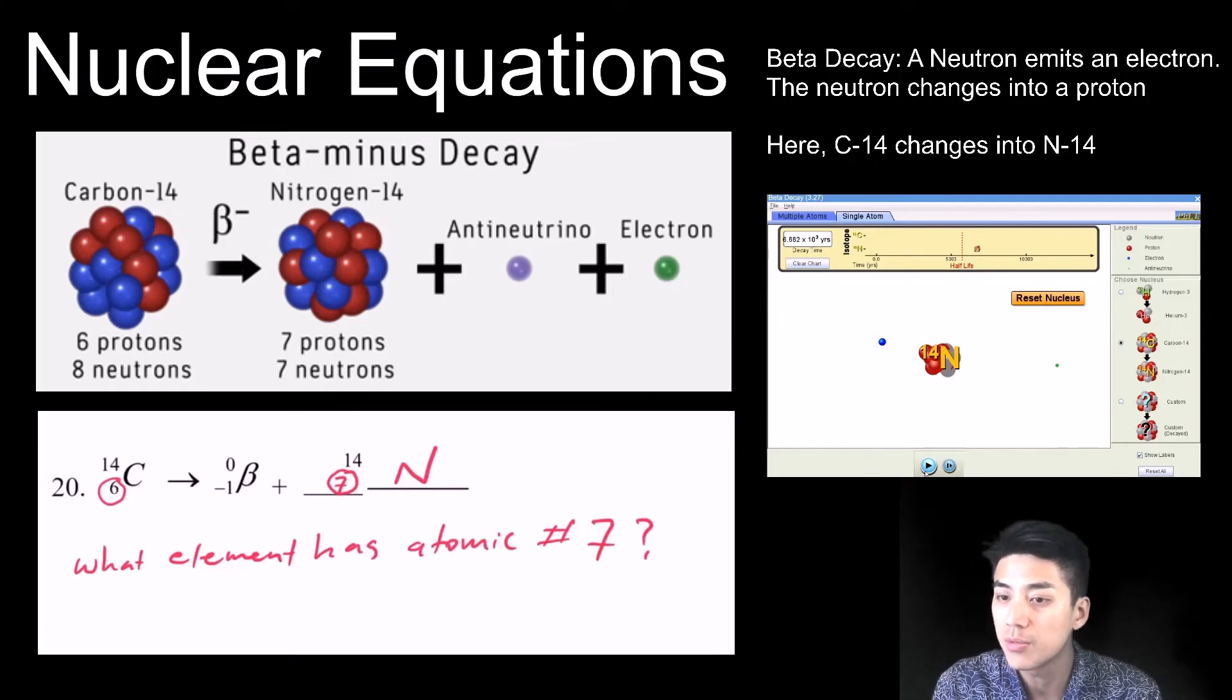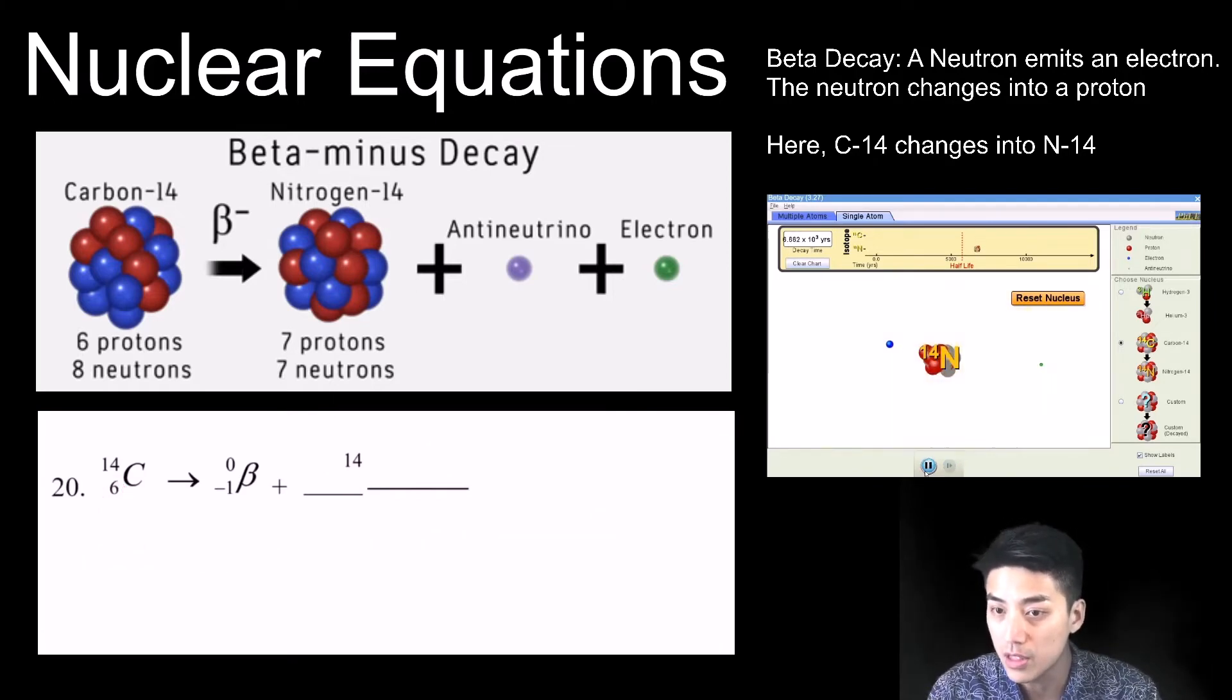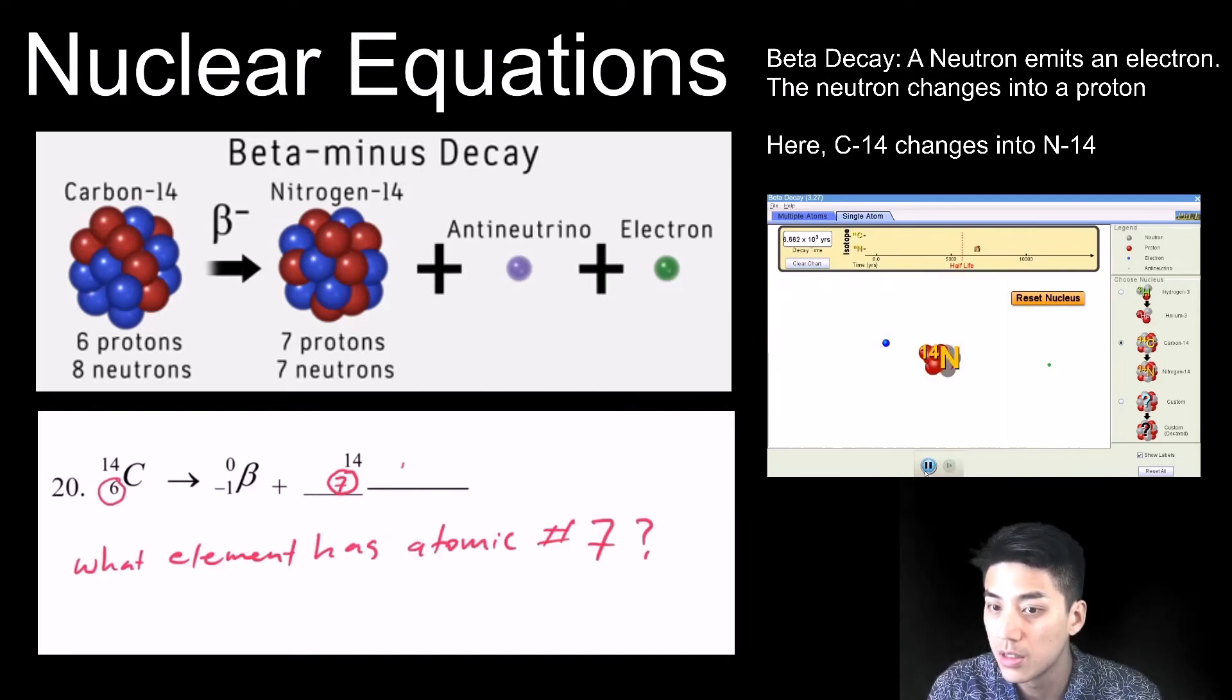So in this problem here, just like in the alpha decay problem that we just did, you just want to make sure the numbers that are on top are equal to each other. So you can see how 14 is equal to 0 plus 14. And you want to make sure the numbers that are on the bottom are also equal to each other.